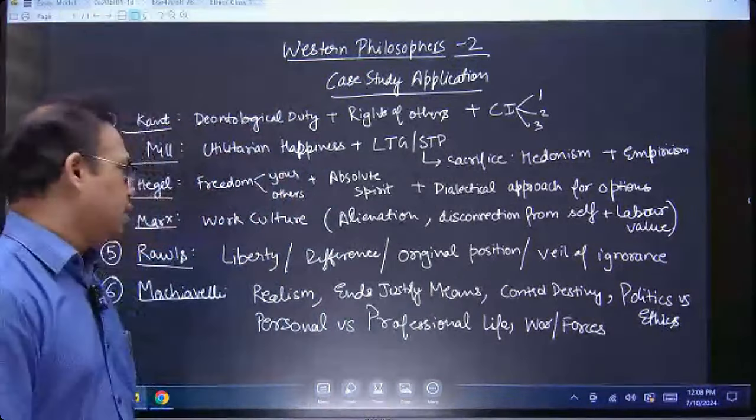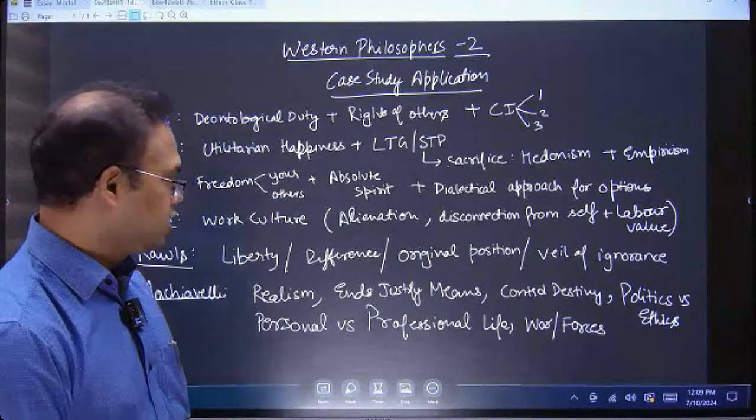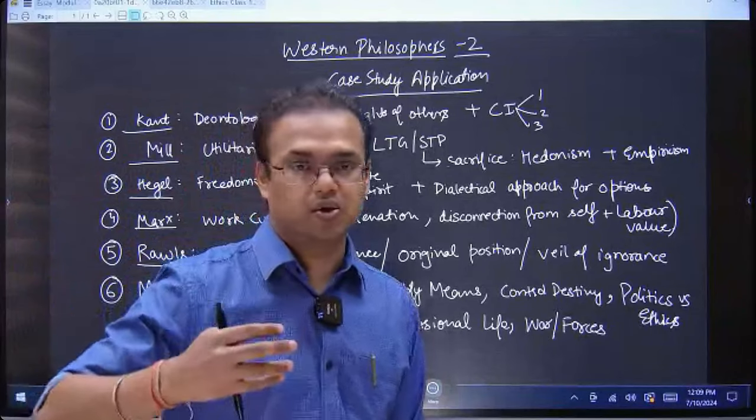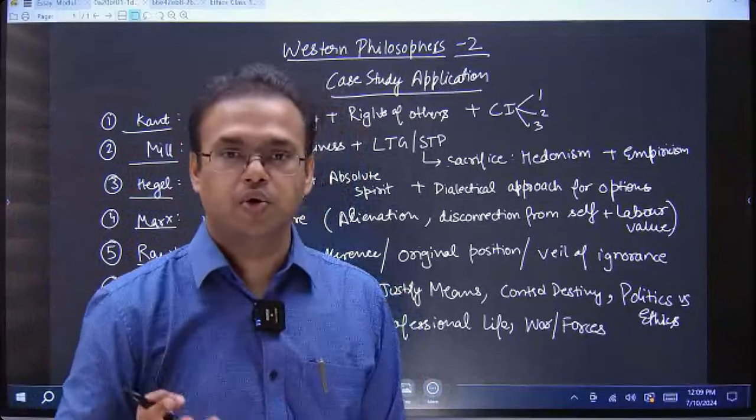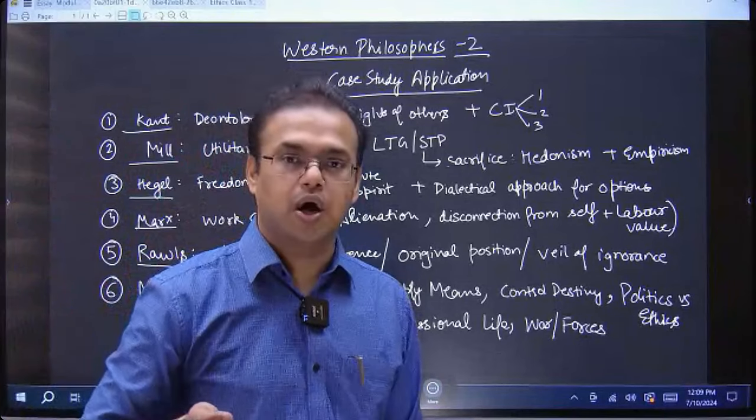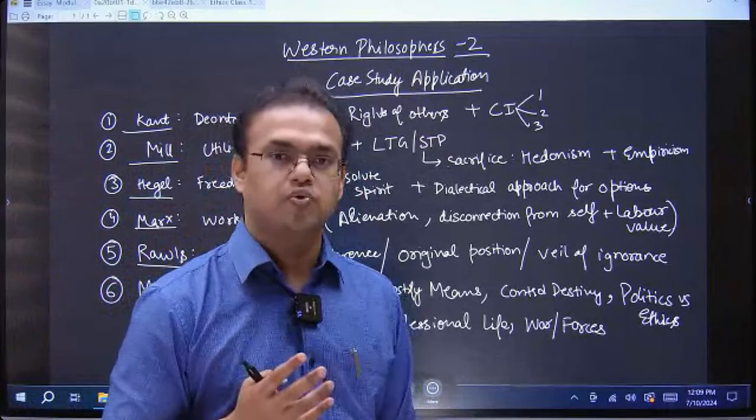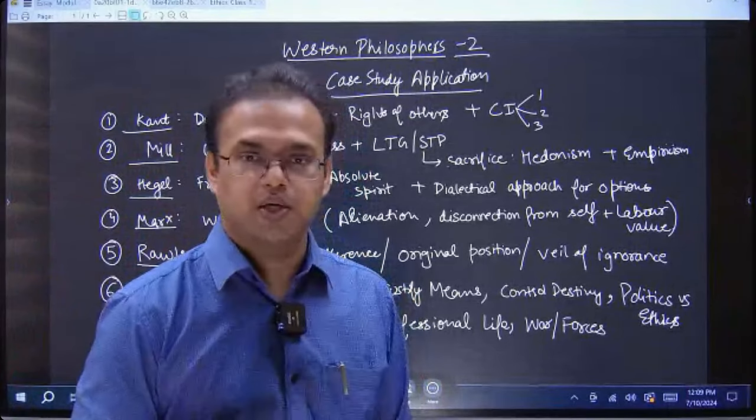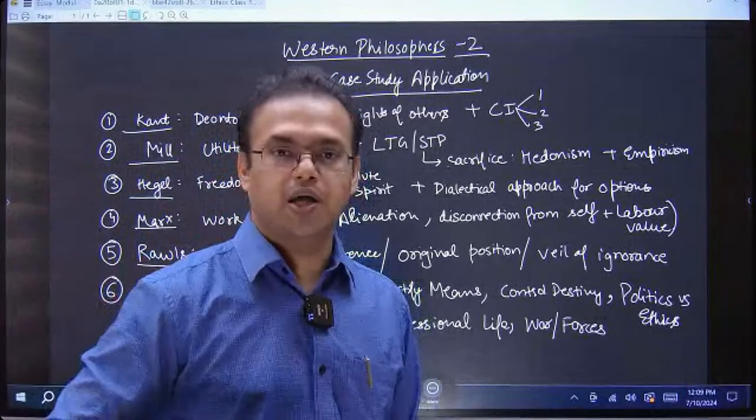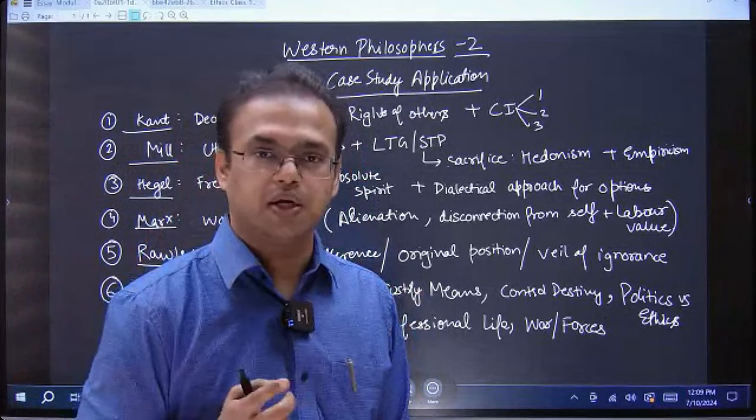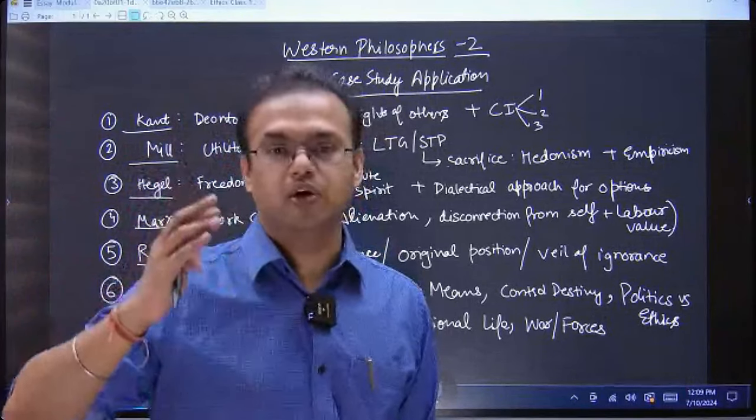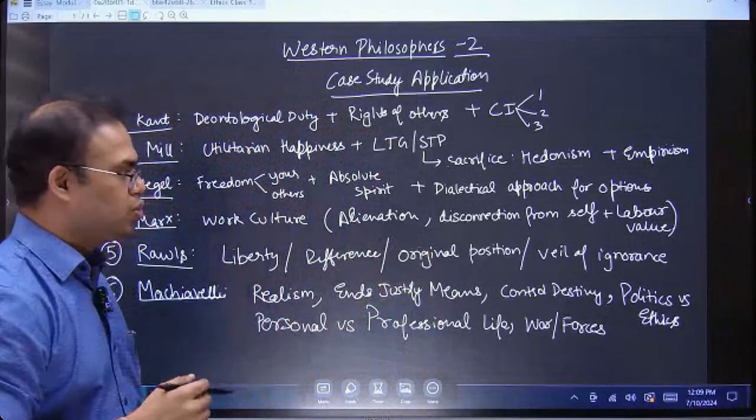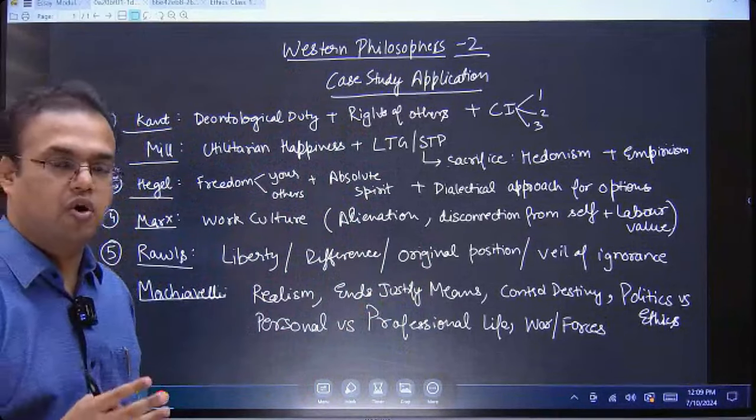There is concept of original position and veil of ignorance. Original position states that we as public servants should make rules and regulations under a veil of ignorance about our own pros and cons with respect to that policy. I explained this with example of single-use plastic ban. If I am a civil servant working on that policy, I also use plastic in my daily life, but as I am making that policy, I will be driven by larger public interest. I will not be worried about what challenges that policy can have on me.